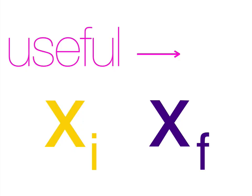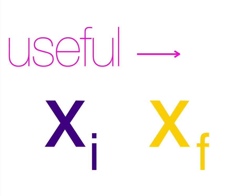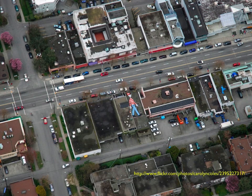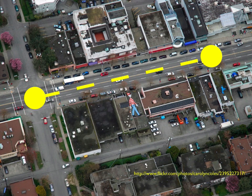The initial position, xi, is just the starting location. The final position, xf, is the ending location. Taking a quick look at an example: a car starts here, a couple seconds later it ends here. The first yellow dot is the initial position, the second dot is the final position. This change in position, going from one location to the other, is distance. The change in position is distance.